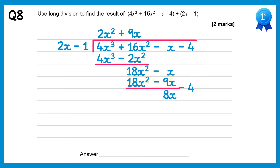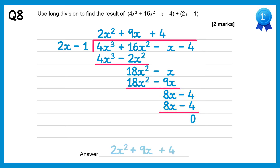Bring down the final term, the negative 4. Do 8x divided by 2x which is plus 4. Multiply back through: 4 times 2x is 8x, 4 times negative 1 is negative 4. Subtract these and you get 0. So our final answer is 2x squared plus 9x plus 4.